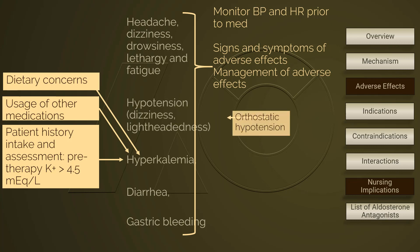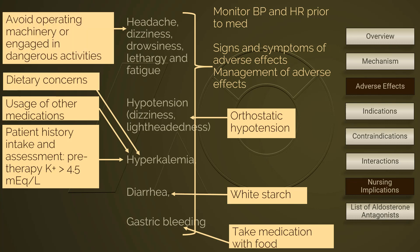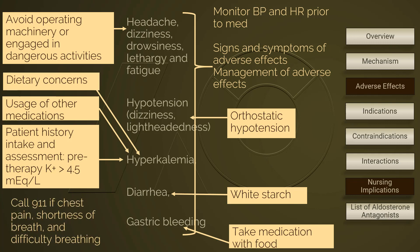Patient education should include prevention of orthostatic hypotension. To avoid GI irritation, take medication with food. Foods to offset diarrhea include white starch such as potatoes, white rice, and white bread. Patients should avoid operating machinery if experiencing CNS adverse effects including headache, dizziness, drowsiness, lethargy, and fatigue. Advise patients to call 911 if experiencing any anaphylactic symptoms. Avoiding a high-potassium diet should also be included in patient education.